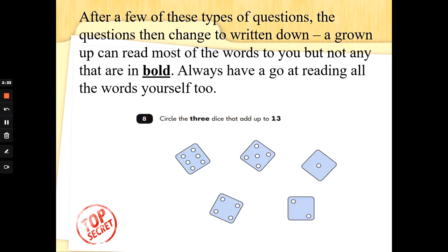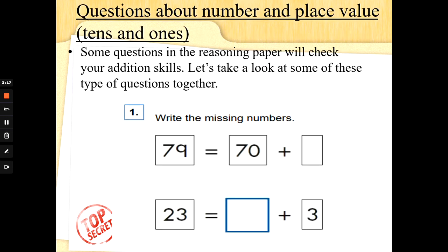After a few of these types of questions, the questions are then changed to be written down. A grown up can read most of the words to you, but not any that are in bold and that means black, dark black writing. But I want you to always have a go at reading all the words yourself too. Mrs G is going to read the questions to you because I'm special agent training and I would advise that you read all the words on the page. So this question is just to show you what bold means. It says circle and then there's a number word in bold and that is three dice that add up to, what is that number word? Thirteen. So the words three and the number thirteen, they are in bold.